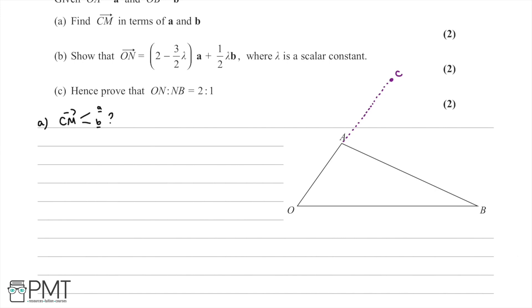Dotting M on the diagram as the midpoint, and thirdly we're told that there's a straight line through C and M — recall this is C and this is M — and this cuts the line O to B at the point N. So if we drop a line down from C all the way to M and on to OB, we'll then have our point N, which we dot down here.